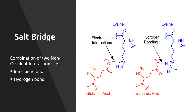The second one is the salt bridge. It is the combination of two non-covalent interactions — ionic bond and hydrogen bond. The two different interactions shown are: electrostatic interaction between ammonium ion and carboxylate ion, and hydrogen bonding between the hydrogen of the ammonium ion and oxygen. So a salt bridge is the combination of these two different forces.